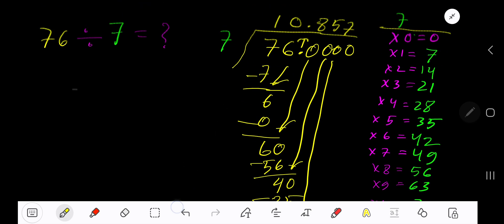You can bring down more zeros, but since we have gotten 3 places after a decimal, just place here 3 dots. This means that this process is continuing. 10.857 dot dot dot is the answer.